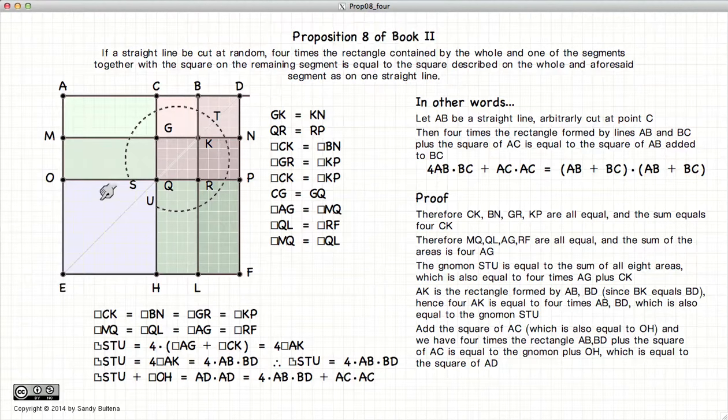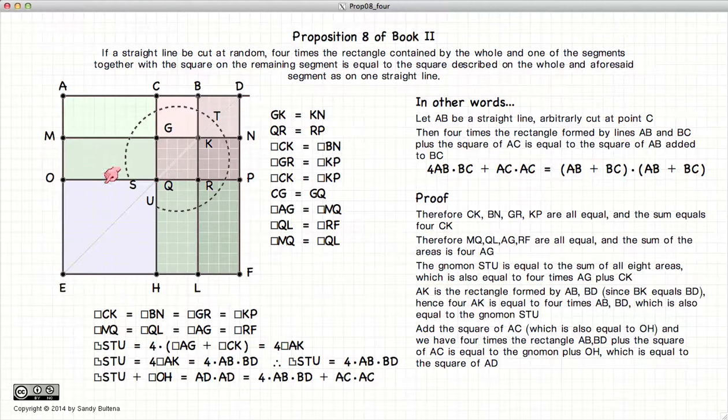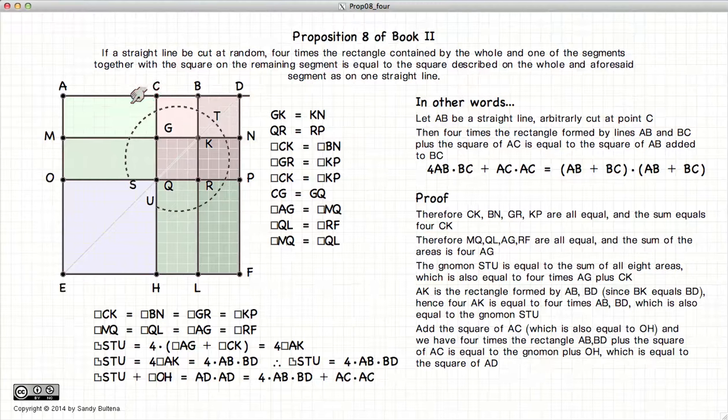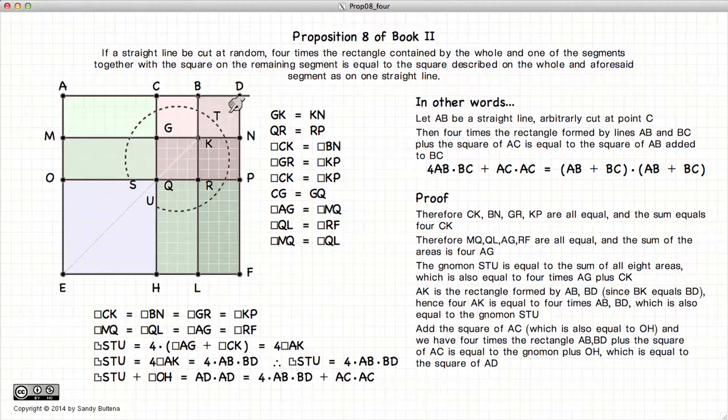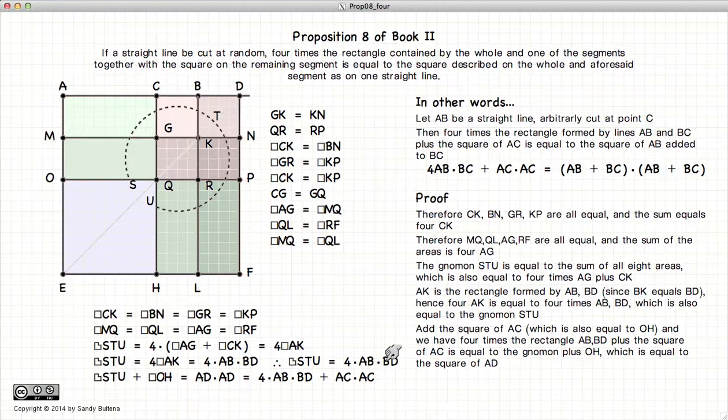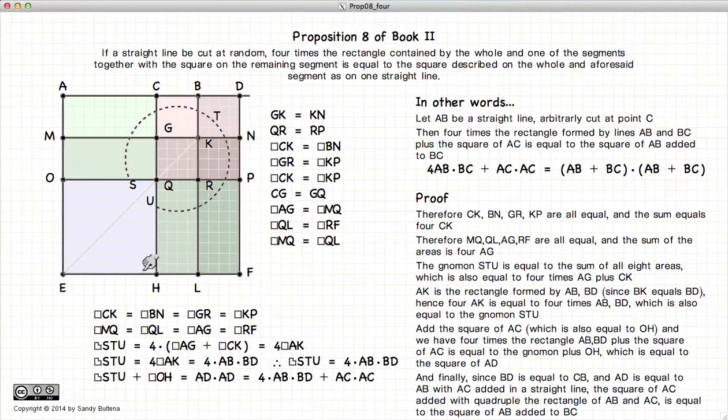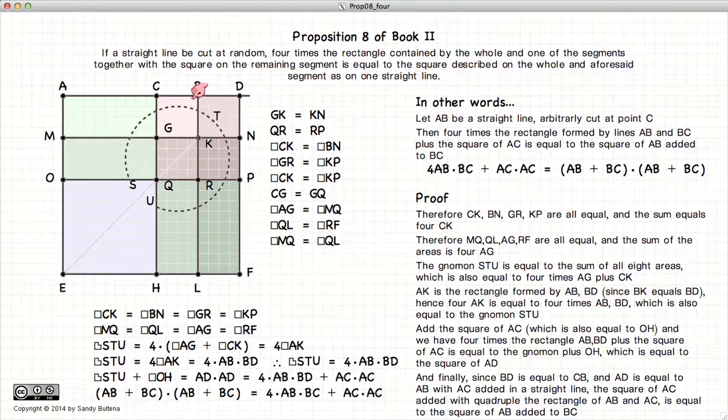plus AC squared. If we now add on, finally, the square OH, OH is equal to AC squared. So STU plus OH is the square of AD. It is also equal to four times AB times BD plus AC squared.